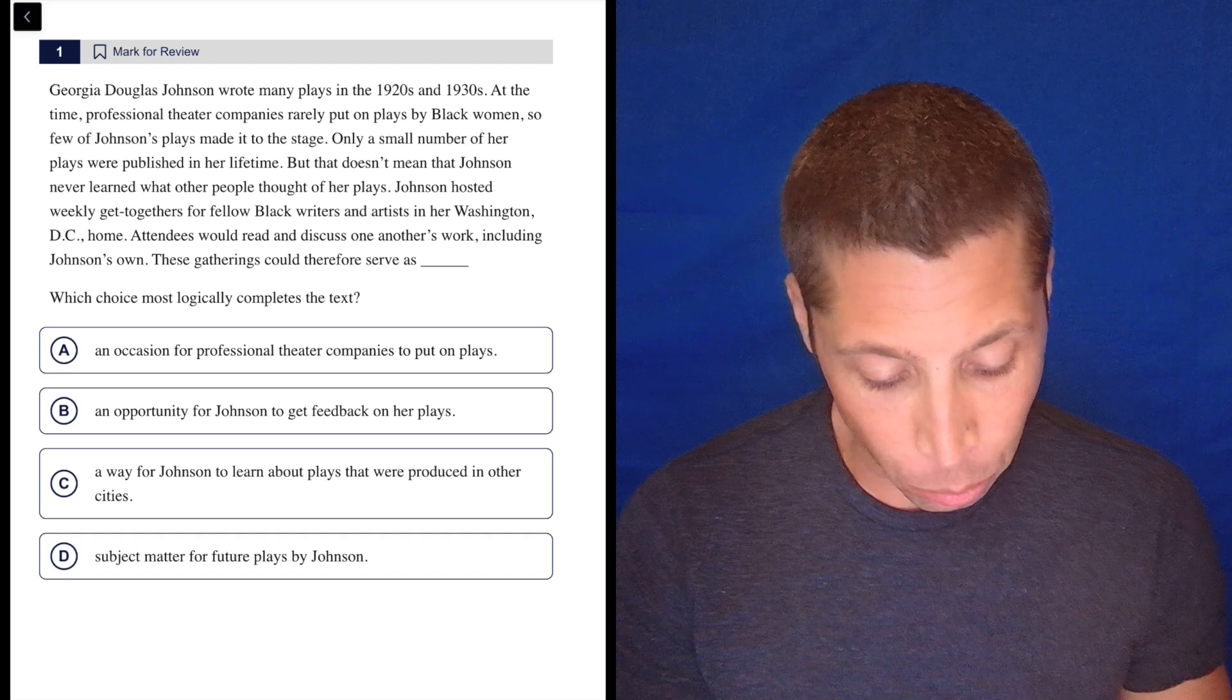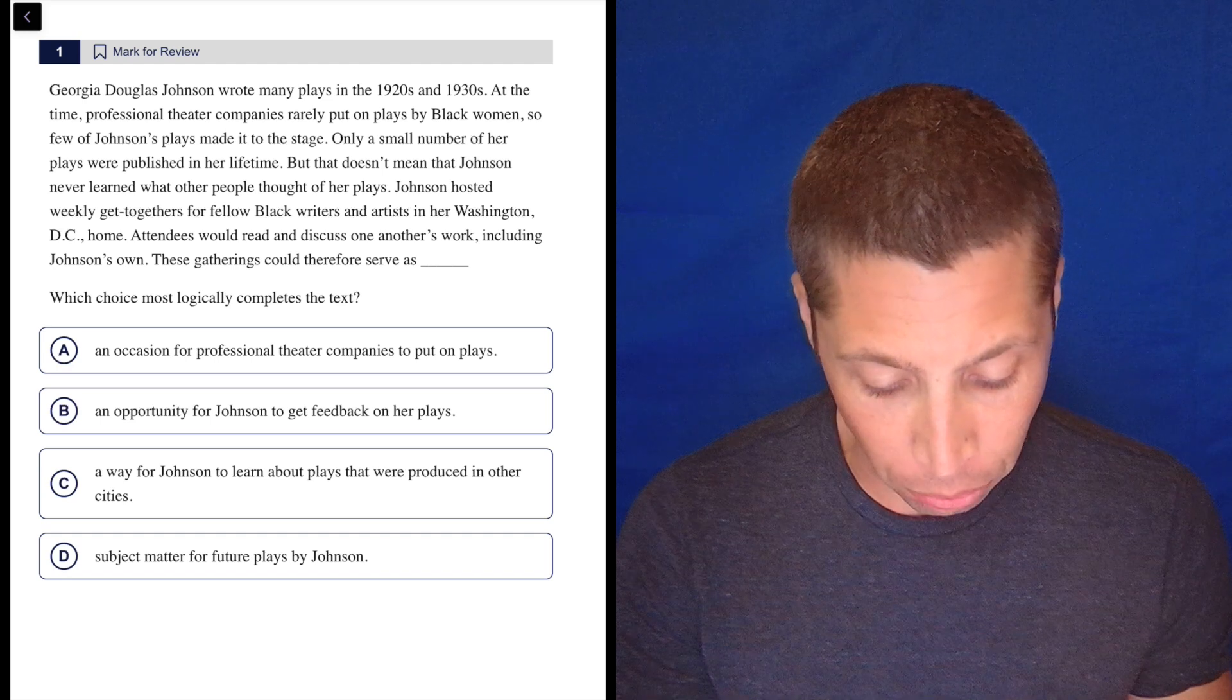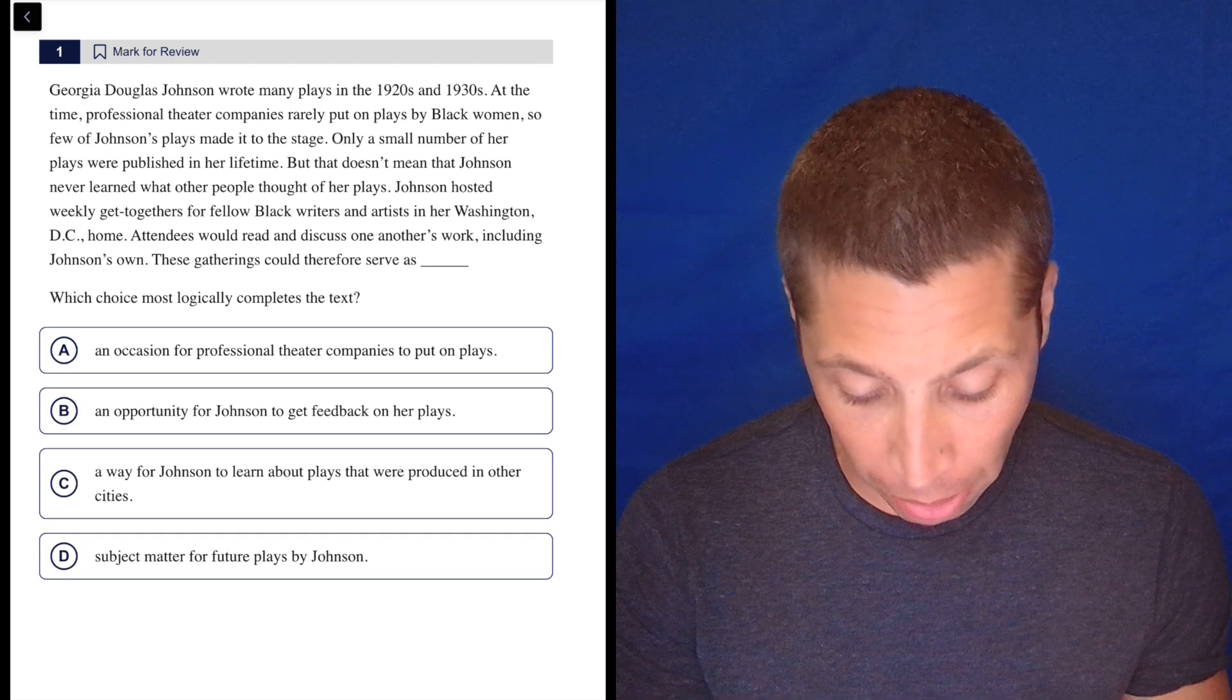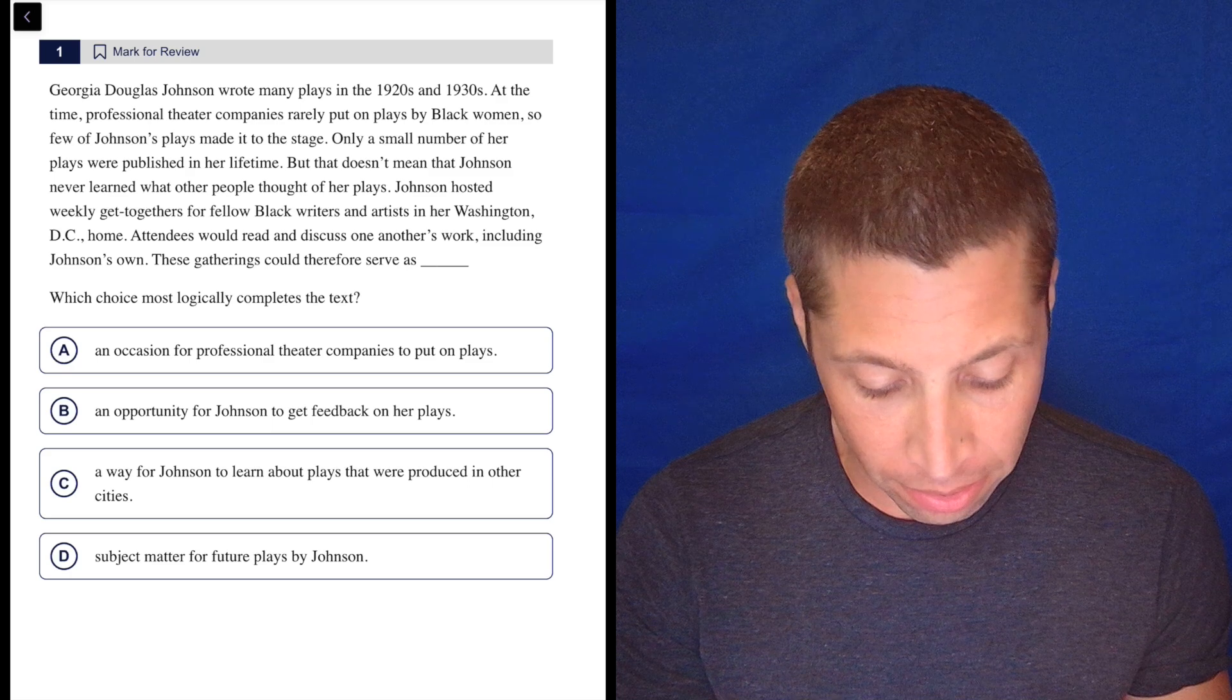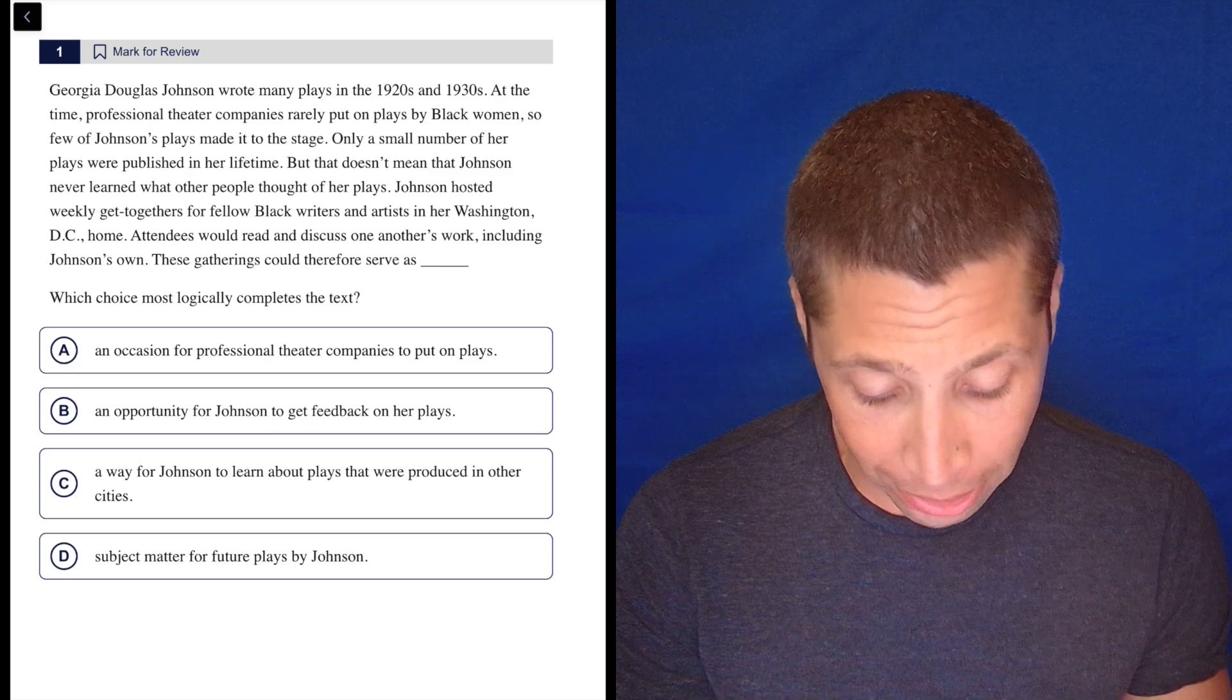Georgia Douglas Johnson wrote many plays in the 1920s and 1930s. At the time, professional theater companies rarely put on plays by black women, so few of Johnson's plays made it to the stage. Only a small number of her plays were published in her lifetime.